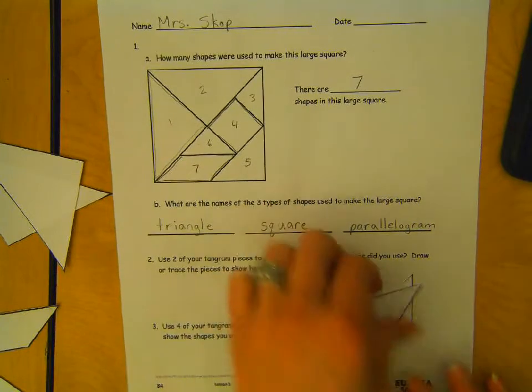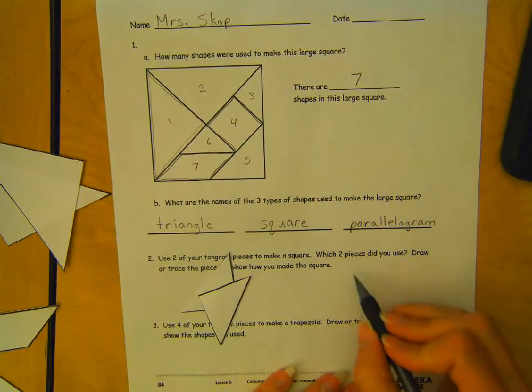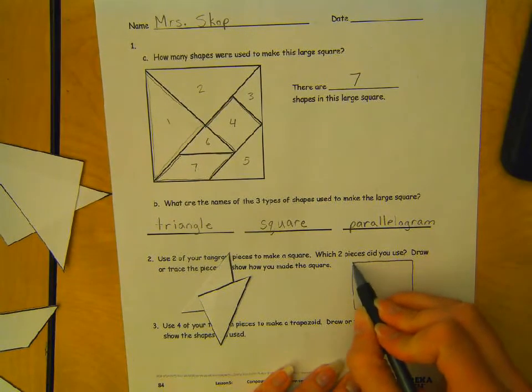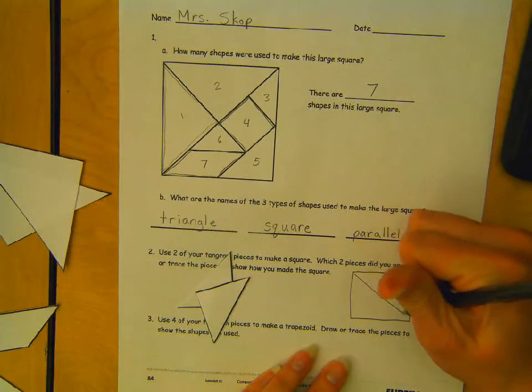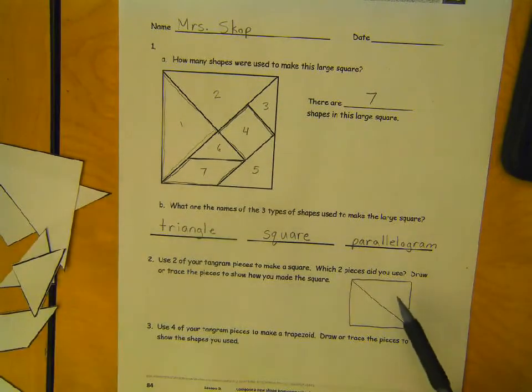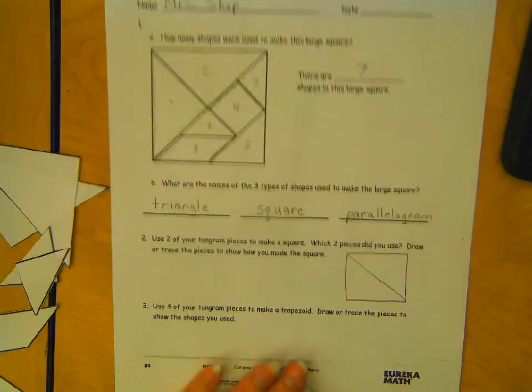So, now I'm just going to draw that. So, here's my square. And, if I go like this, then it shows that I have two triangles that made my square.